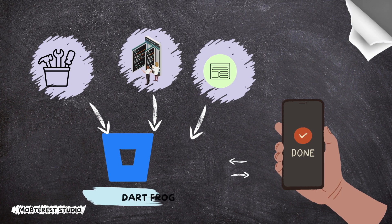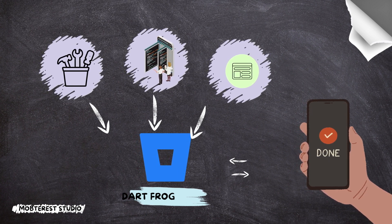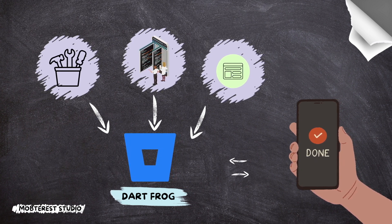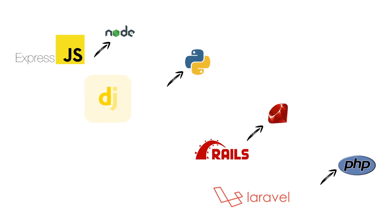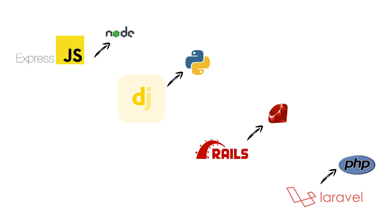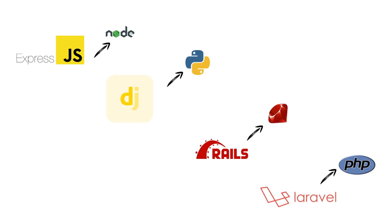So what's Dart Frog? Dart Frog is a back-end framework. A back-end framework is a pre-built collection of tools, libraries, and templates that simplifies and accelerates the process of building the server-side components of a mobile app or web application. Examples of popular back-end frameworks include Django for Python, Ruby on Rails for Ruby, and Laravel for PHP. Think of a back-end framework as a toolbox that empowers developers to streamline the development process and create robust, efficient, and secure applications that handle tasks like data processing, database interactions, and business logic.